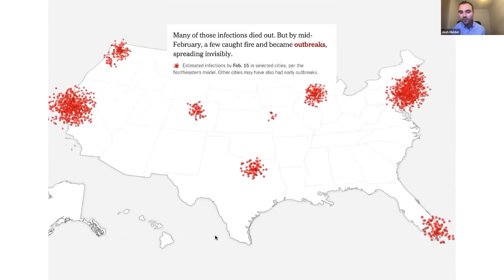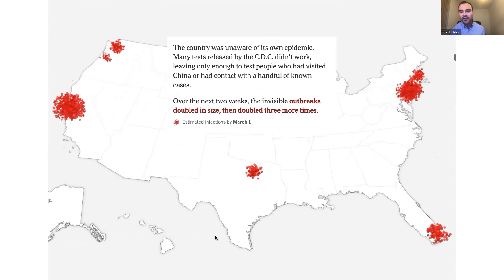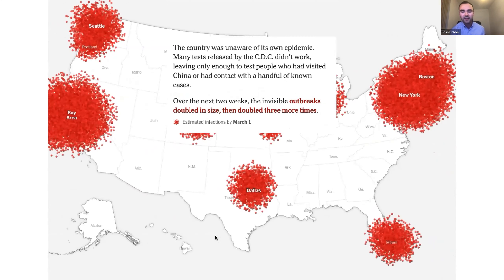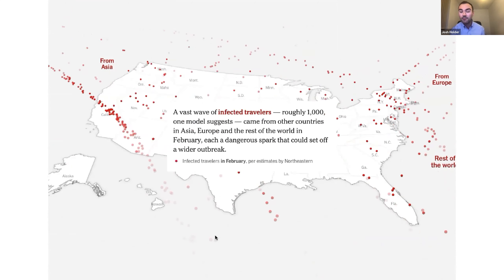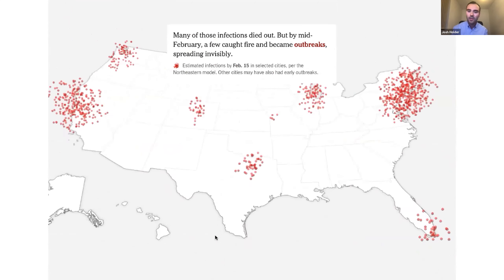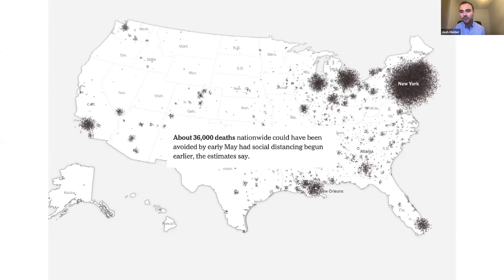One of those was Alessandro Vespignani here at Northeastern. Really early on, he provided us estimates of the number of infected travelers who came into the US, as well as the number of infections being missed in official case counts. We also worked with Jeffrey Shaman at Columbia, and his modeling was crucial for understanding how contagious domestic travelers were and how many deaths could have been avoided with earlier restrictions.